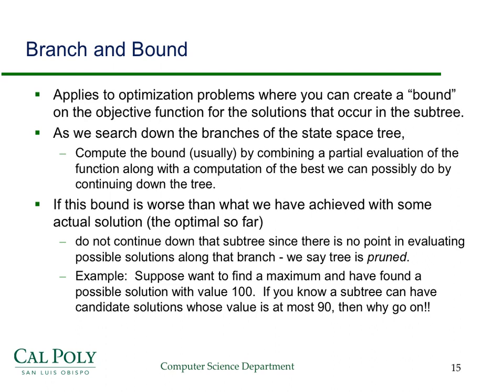Branch and Bound applies to optimization problems where you basically create a bound on the objective function — the thing you're trying to maximize or minimize — that occurs in the subtree. In other words, you're searching through the state space tree, just as you do in backtracking.